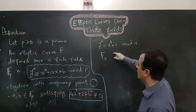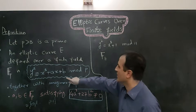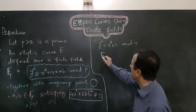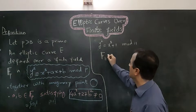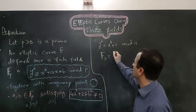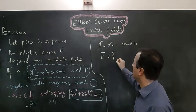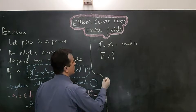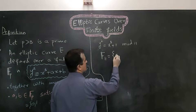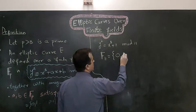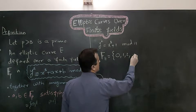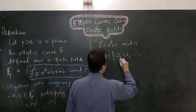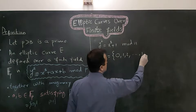In this case we have chosen a equals zero and b equals one. F11 has the following elements: it is a field with elements zero, one, two, all the way up to 11 minus one, which is 10.